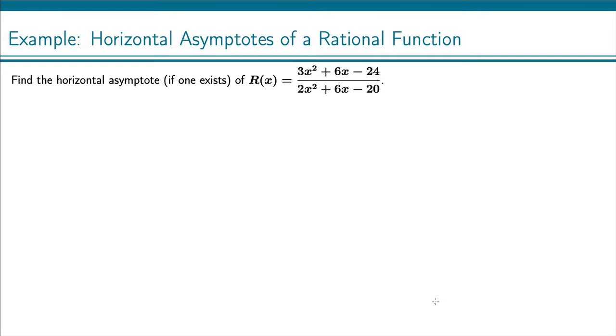Find the horizontal asymptote, if one exists, of the rational function 3x squared plus 6x minus 24 over 2x squared plus 6x minus 20.